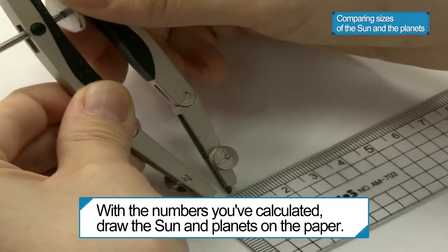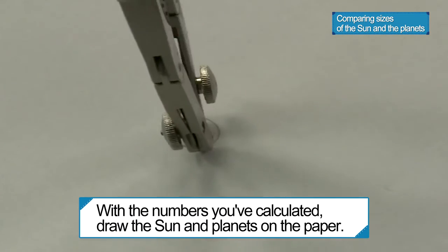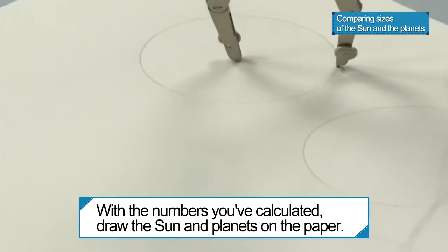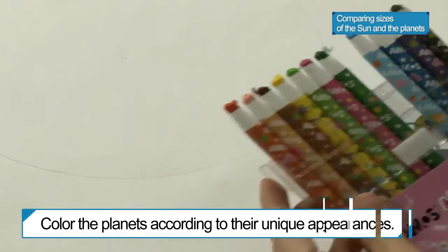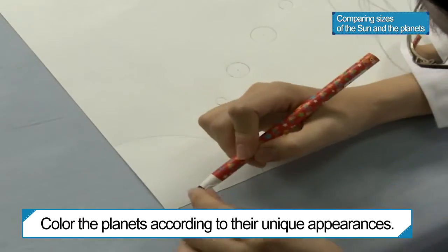So let's draw just a part of the Sun and draw other planets one by one. If you've finished drawing, give the planets some nice colors.